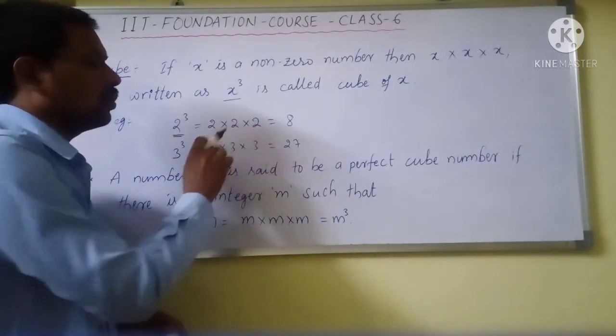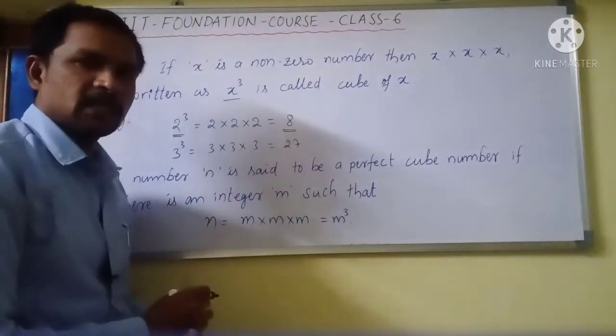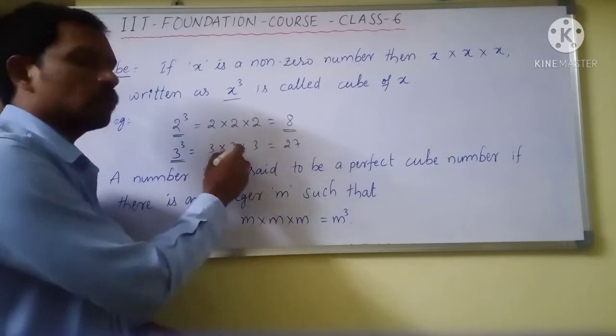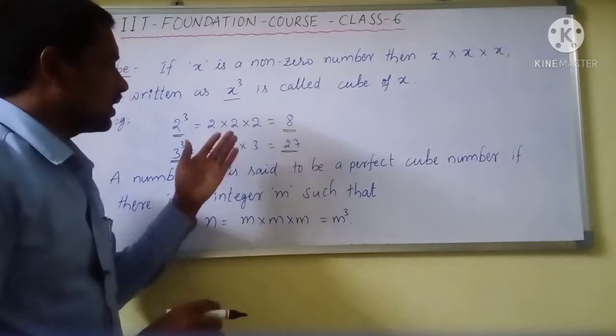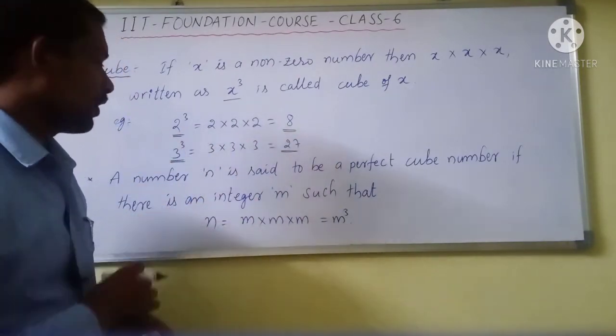For example, 2 power 3, that means 2 into 2 into 2, three times, so its value is 8. Then 3 power 3, so 3 into 3 into 3, so its value is 27. These are a few examples.